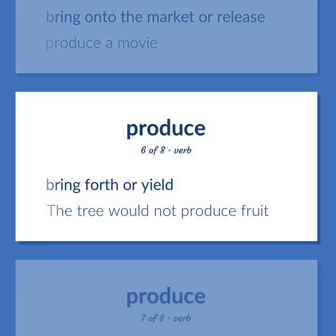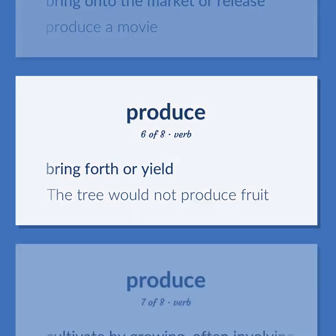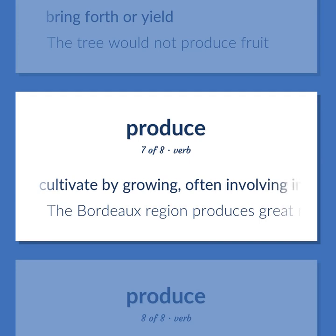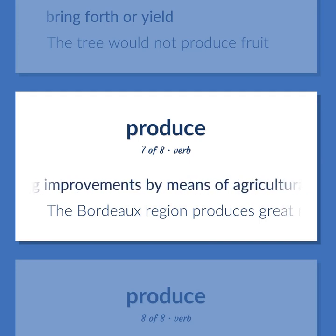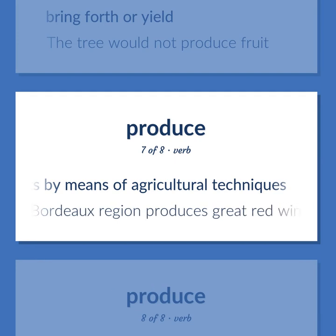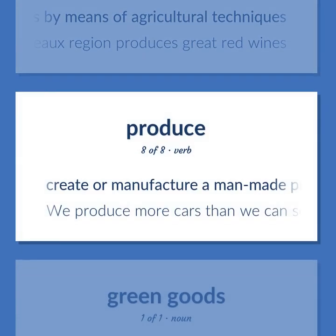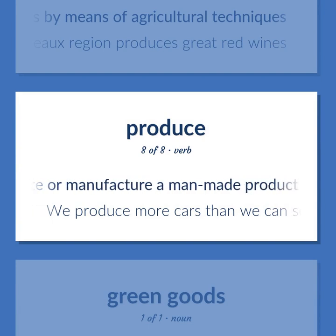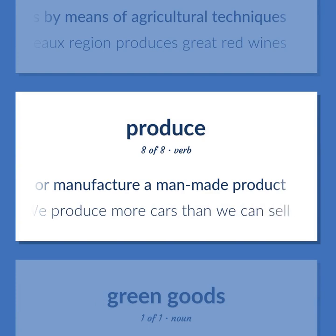Produce: Bring forth or yield — the tree would not produce fruit. Cultivate by growing, often involving improvements by means of agricultural techniques — the Bordeaux region produces great red wines. Create or manufacture a man-made product — we produce more cars than we can sell.